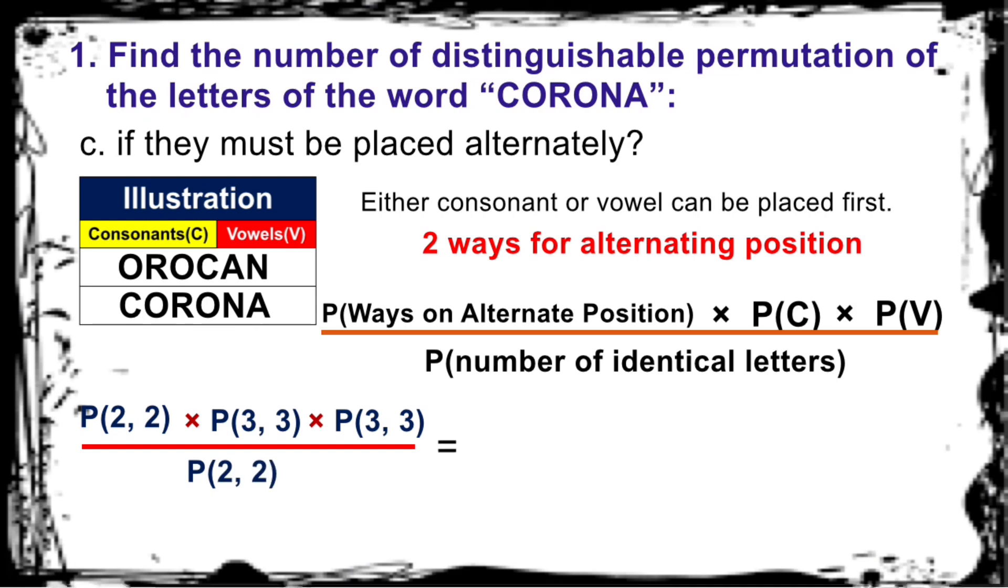Equals 2 factorial times 3 factorial times 3 factorial divided by 2 factorial. Do we have the same number? Yes, that is 2 factorial. Cross them out so the remaining numbers are 3 factorial times 3 factorial equals 3 times 2 times 1 times 3 times 2 times 1 equal to 36. Good job! I know you got it right!